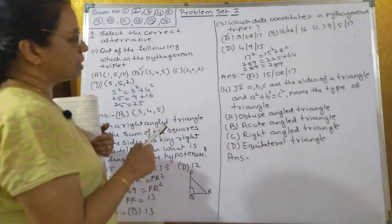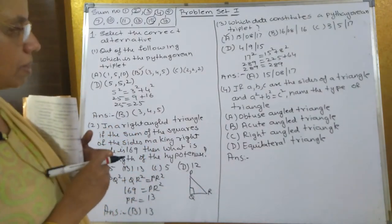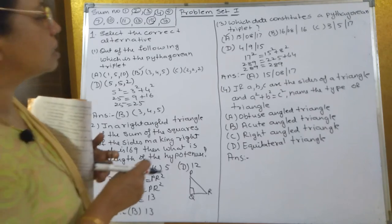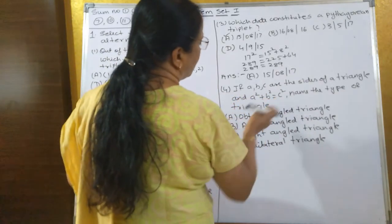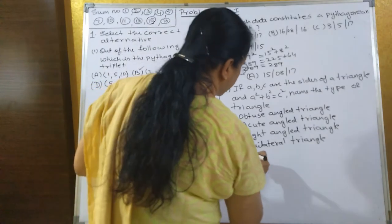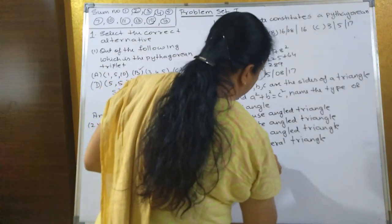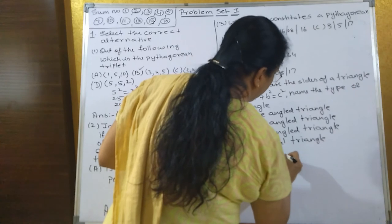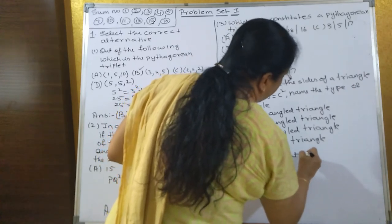Next one - if A, B, C are the sides of a triangle and A² + B² = C², then what type of a triangle is it? When we use this formula, it is a right angle triangle, so C is the correct answer. Option C: right angled triangle.